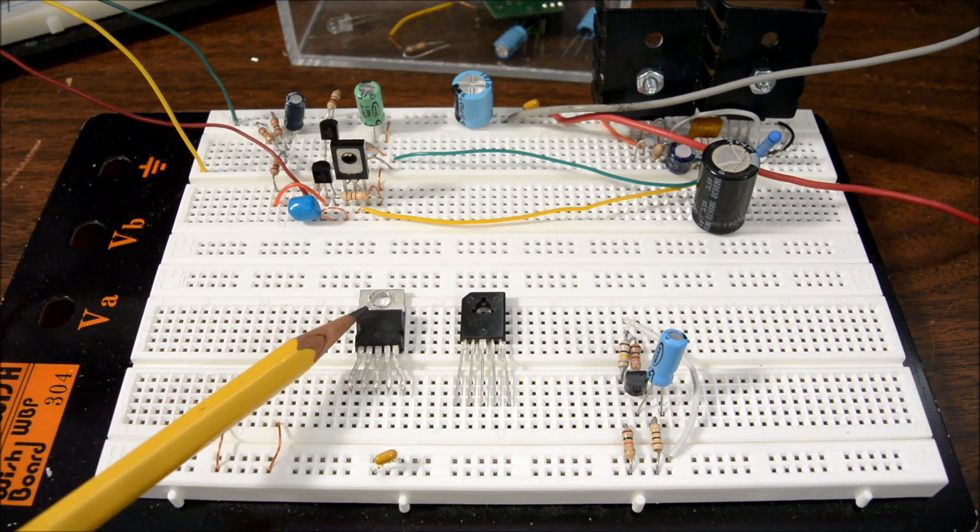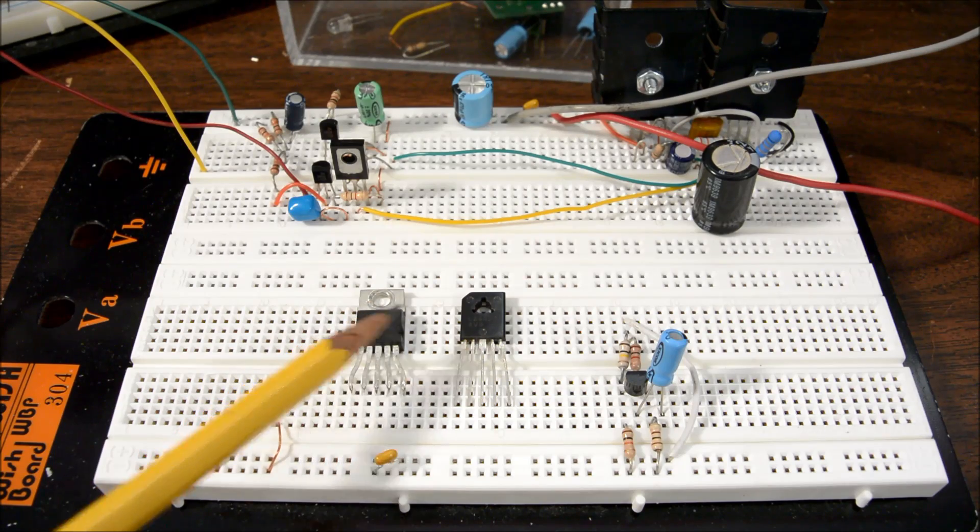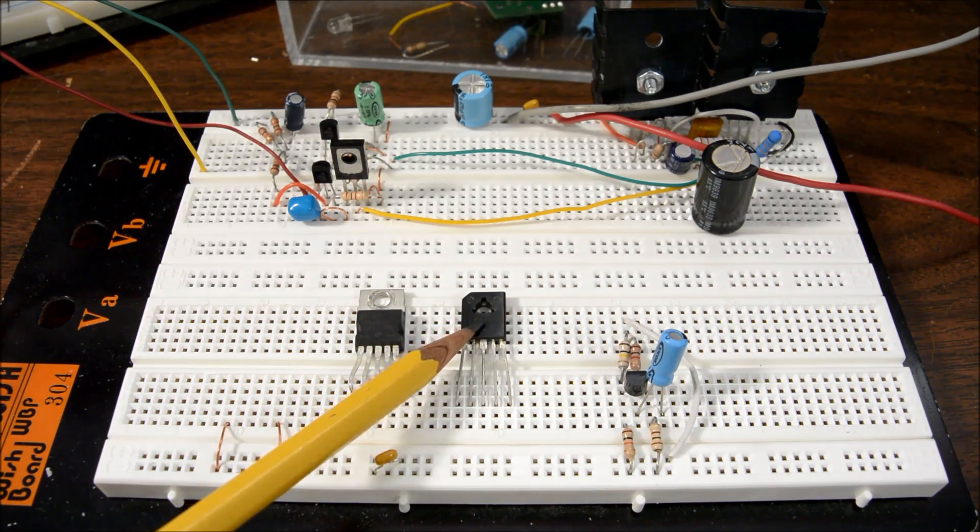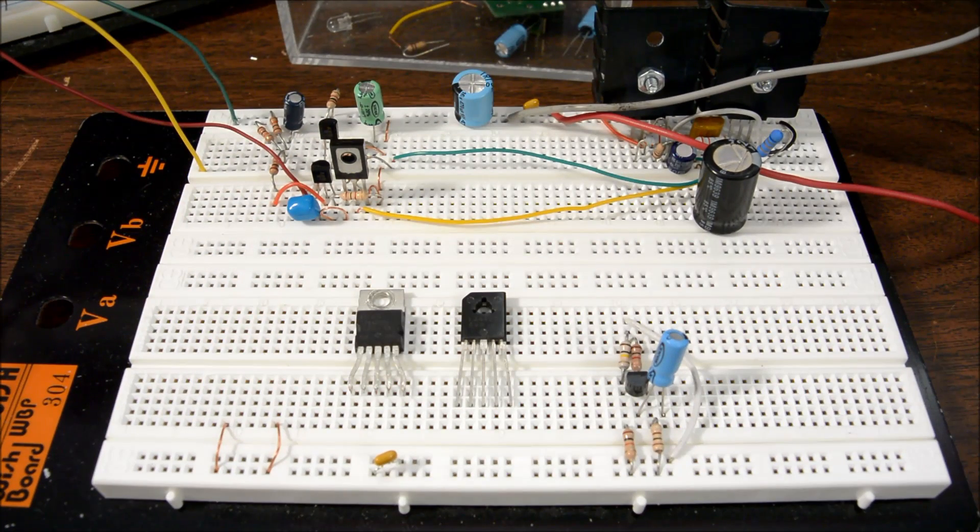I'm going to guess the TDA2003 will come in first, followed by this one, and the discrete amplifier will come in third. That's just my guess - I have no idea what's going to happen here.